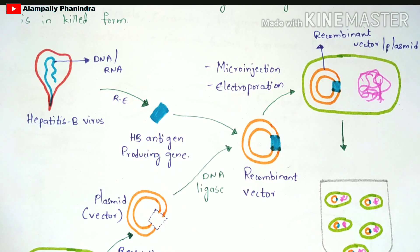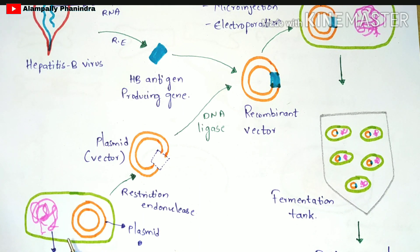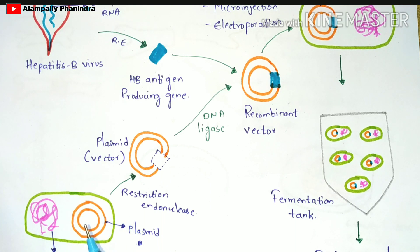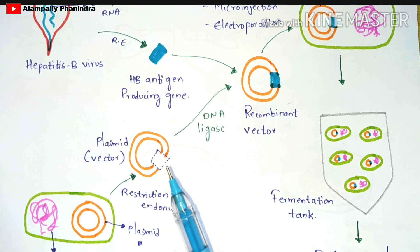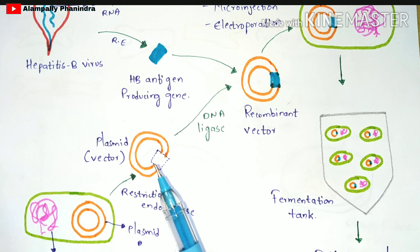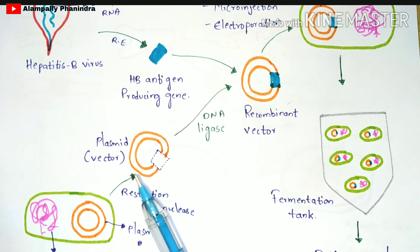Keep this HB antigen producing gene aside. On the other hand, take a bacterium — bacteria contain a plasmid as well as bacterial DNA. Leave the bacterial DNA and isolate the plasmid from the bacterial cell. Once the plasmid is isolated, add the restriction endonuclease enzyme. This enzyme cleaves the plasmid at a particular restriction site, creating an empty position.